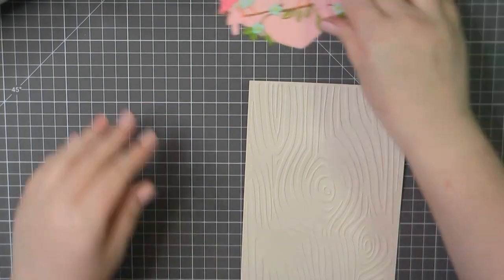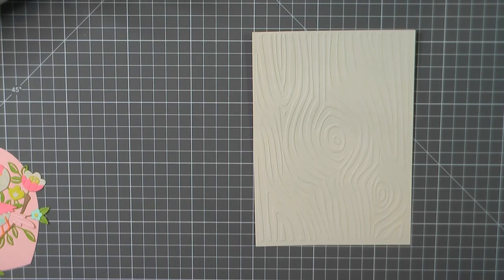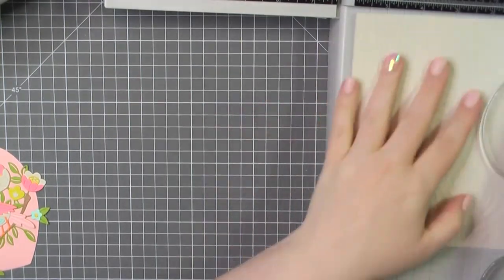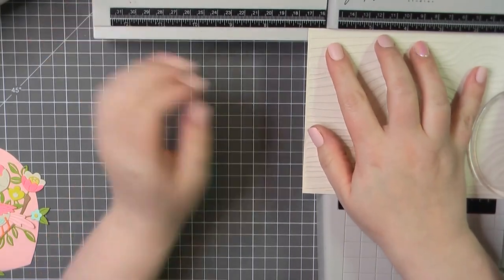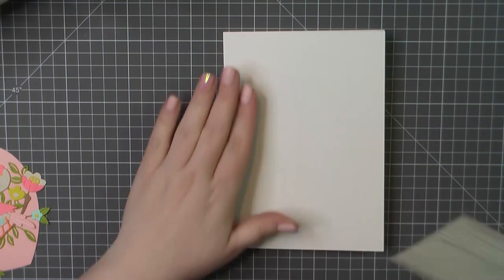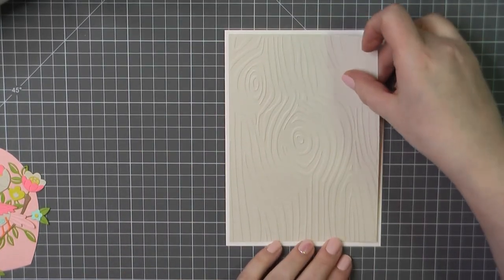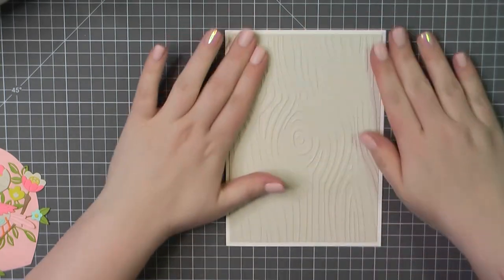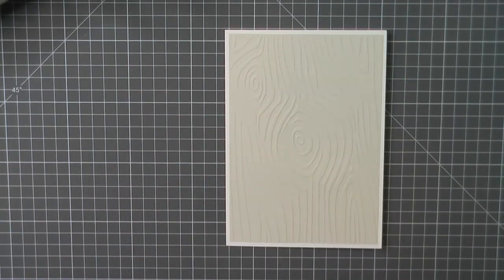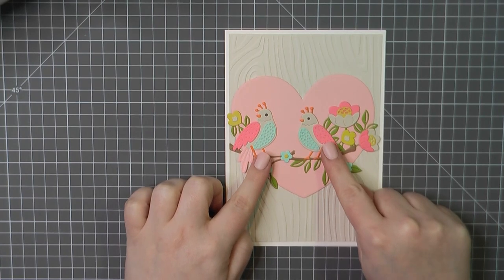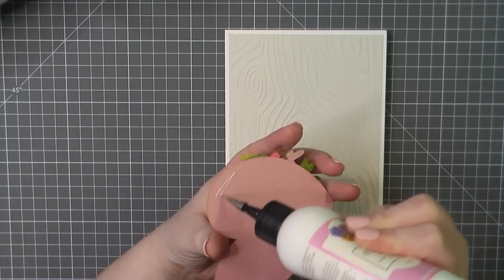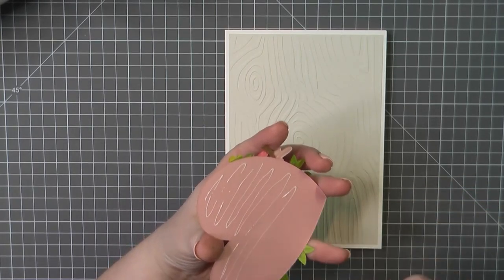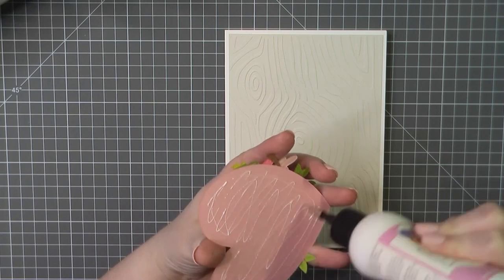For my background I am using a Darice woodgrain embossing folder. Again I'm going to trim that down to four and three-quarters by six and three-quarters. I will add some ATG to the back of that and place it on top of my five by seven card base. I'll add some art glitter glue to the back of my heart and add that in the center.